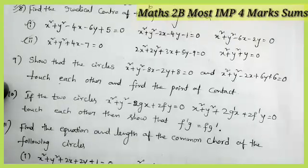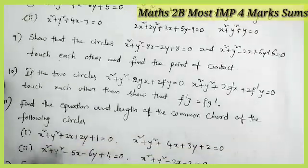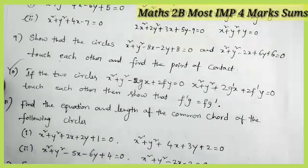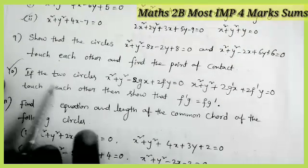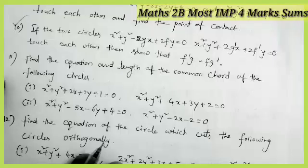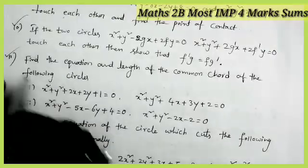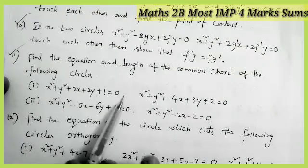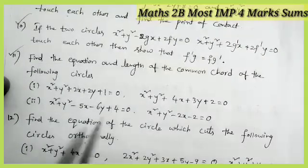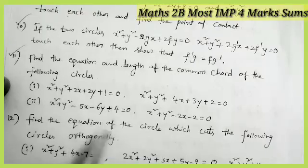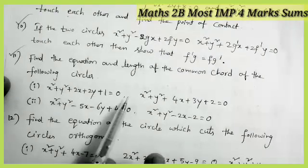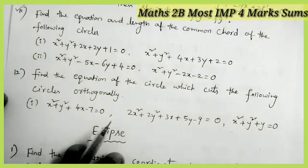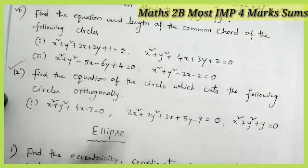Show that the circles touch each other and find the point of contact — important. If the two circles touch each other, then show that f' times g equals f times g' — most important question. Find the equation and length of the common chord of the circles — most important model. Find the equation of the circle which cuts the following circles orthogonally — important model. These are the four-mark questions from the topic system of circles.